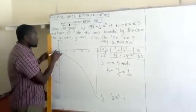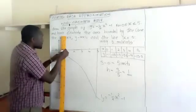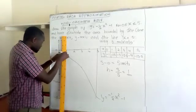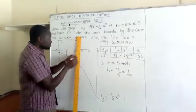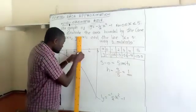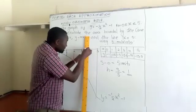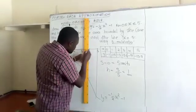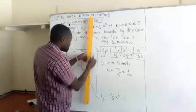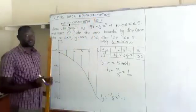Therefore, from 0, this will be our first rectangle, 0 to 1. The other one will be from 1 to 2. The next one, 2 to 3. The next one, 3 to 4. And finally, we have 4 to 5.